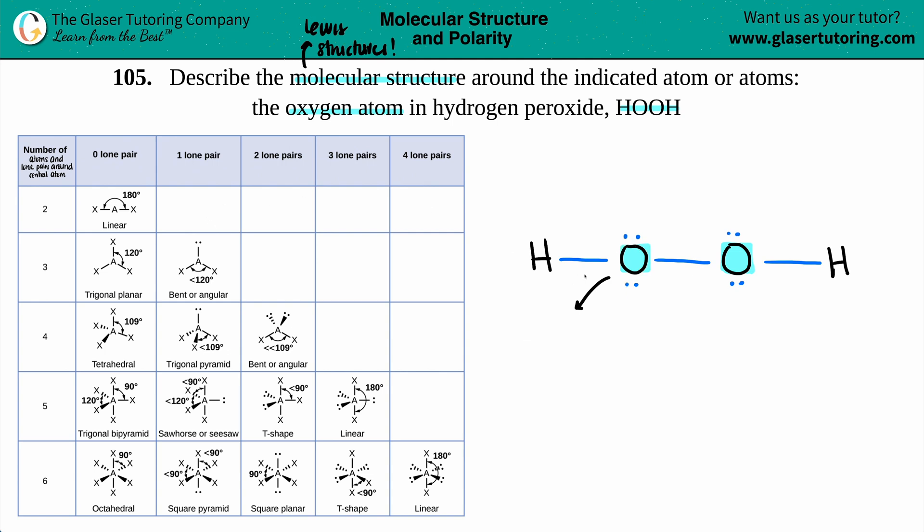So how many atoms are bound to this oxygen? Well, I have the hydrogen and I have the other oxygen. So I have two atoms and now I have one and two lone pairs. And the same would be for the other oxygen. It has two atoms, one and two, and two lone pairs.